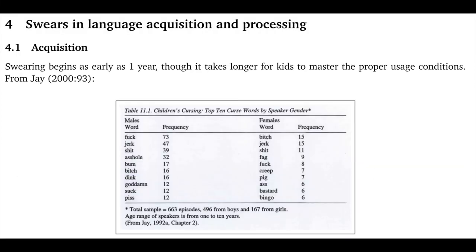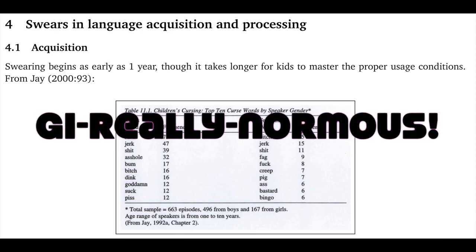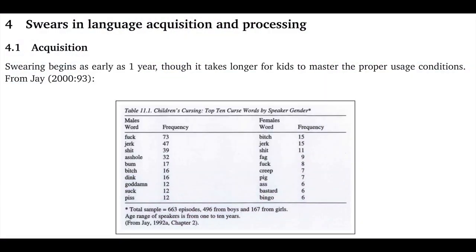And that's a nice transition into our final topic for the screencast: swears and language acquisition and processing. First, swearing begins in kids as early as one year old, though it takes much longer for kids to master the proper usage conditions — we saw that a little bit with my niece's "jai-really-normus." The bottom line is that kids swear, and some of them swear a lot, and their swearing is initially not well aligned with social norms. This should not surprise us: kids are smart, and they learn quickly that swearing is important in society, but the rules are very complex.